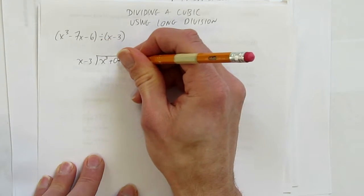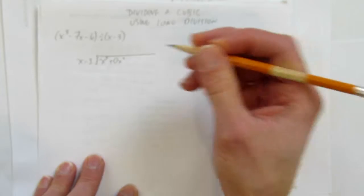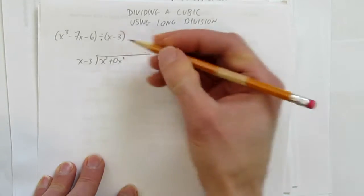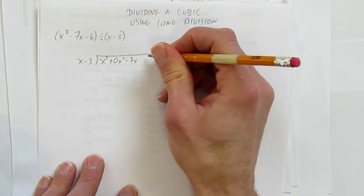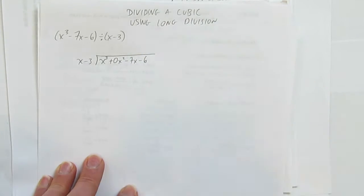We're going to have to fill in the blank for the x² terms that aren't here. There are 0x² terms, so we need a placeholder. We write 0x², then our other terms: -7x - 6.